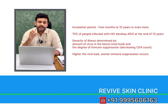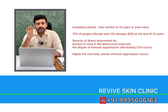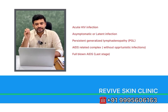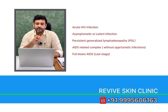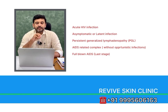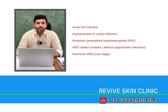According to CDC, the HIV infection is classified into multiple stages. The first stage is acute HIV infection, then comes asymptomatic or latent infection, then persistent generalized lymphadenopathy, then AIDS-related complex without opportunistic infection, and then full-blown AIDS, which is the last stage of the condition.